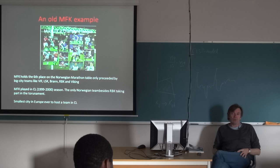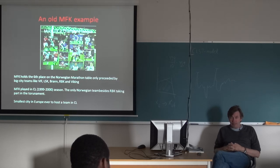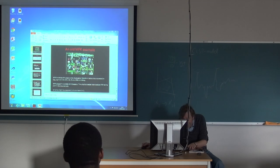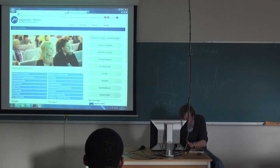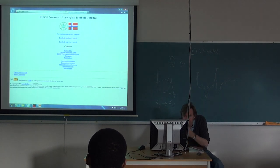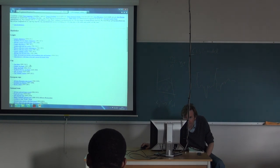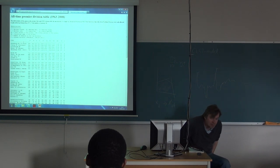So let's move on to a more comprehensive example, where we look at the local football club. We need to say a few words about the football club before we start. It says here that MFK holds the sixth place on the Norwegian marathon table only preceded by big city teams like Vålerenga, Lillestrøm, Brann, Rosenborg and Viking. Did you know this? Maybe you didn't. Let me prove it to you. If you're interested in football statistics, this is a very good place to look. RSSSF.no. You probably have to do a triple W in front, I think. Let's see if that works. Yeah. It's in English. Very nice. RSSSF Norwegian football archive. If you look at the all-time Premier Division table, you can see Norwegian football team's performance over many years. And you probably see that Molde is here on the sixth place.